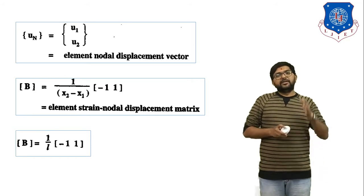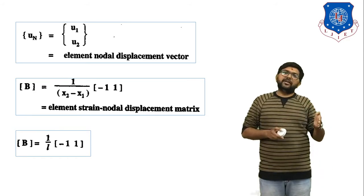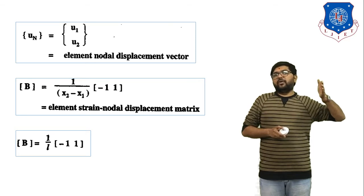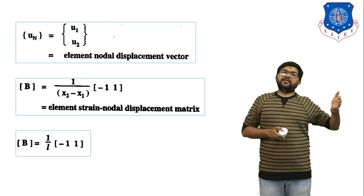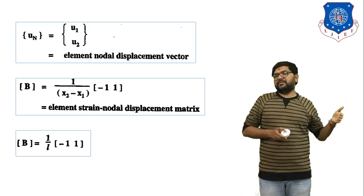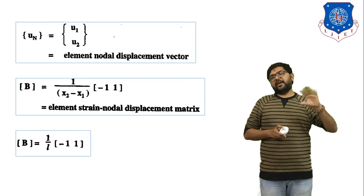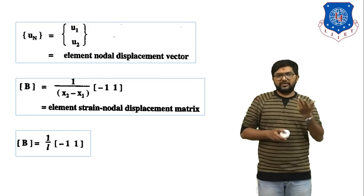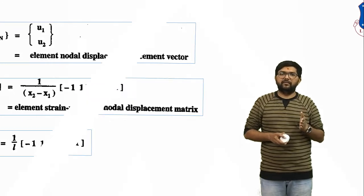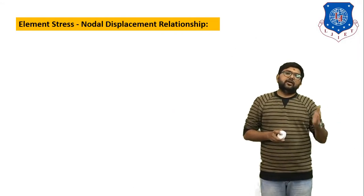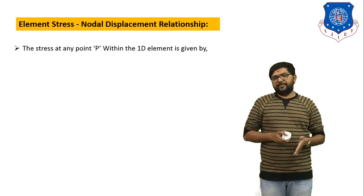Since x2 minus x1 indicates the length of the element L, we write B equals (1/L) times [minus 1, 1]. Here x1 is the distance of node 1 from the reference axis and x2 is the distance of node 2, so x2 minus x1 equals L, the element length. This completes the element strain–nodal displacement relationship.